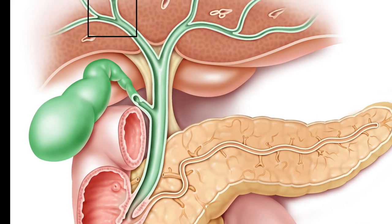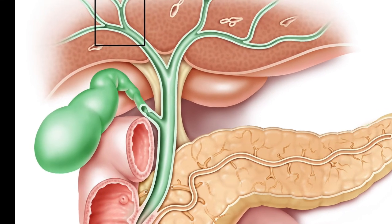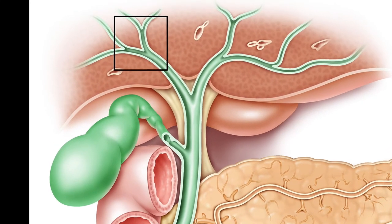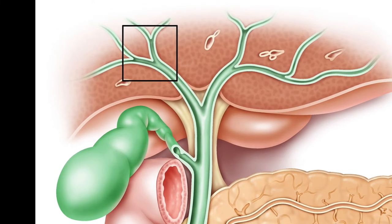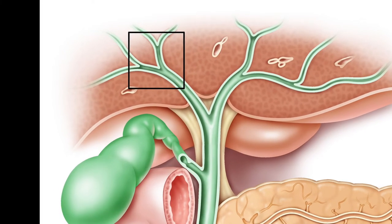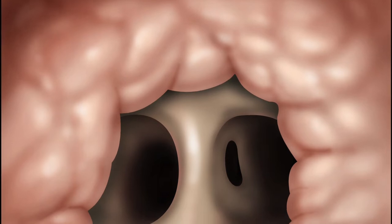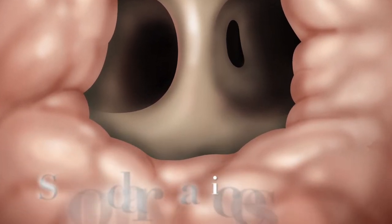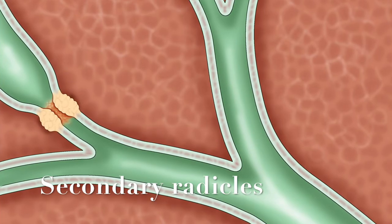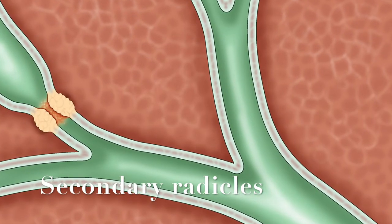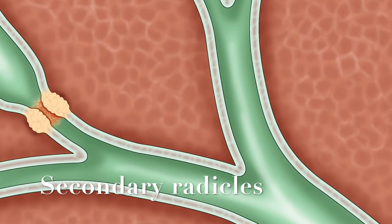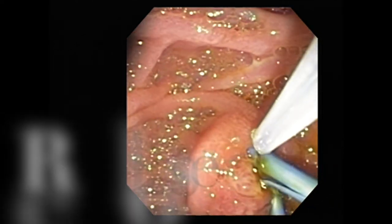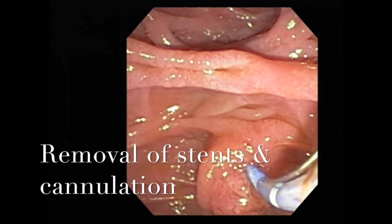Here we see an artist's rendering of what the biliary system looks like. You're seeing a coned-in image from the right main hepatic duct as it bifurcates to the primary bifurcation, secondary bifurcation, and the tertiary bifurcation. This is a view from inside the cholangioscope looking in the bile duct itself, trying to determine secondary radical involvement. Secondary radical involvement on both sides from a Klatskin tumor prohibits the ability to perform surgical resection.